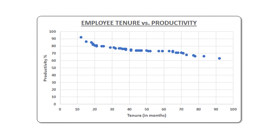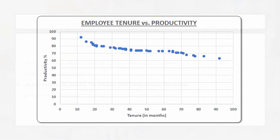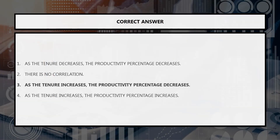Here is the scatterplot. Let's analyze it. You will find that as the tenure of the employees increases, their productivity is showing a lowering trend. So the appropriate statement that will be correct is: as the tenure increases, the productivity percentage decreases.